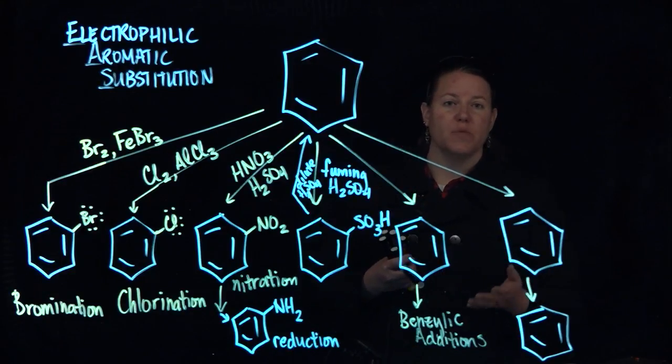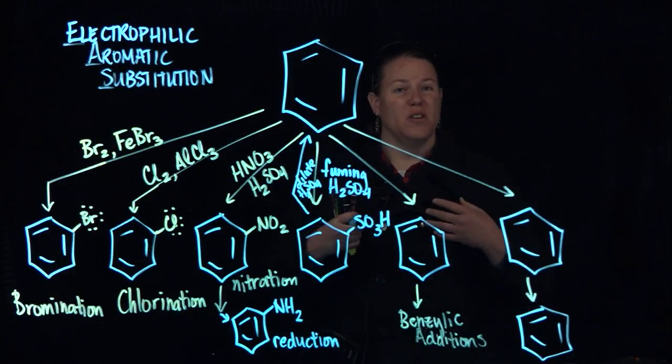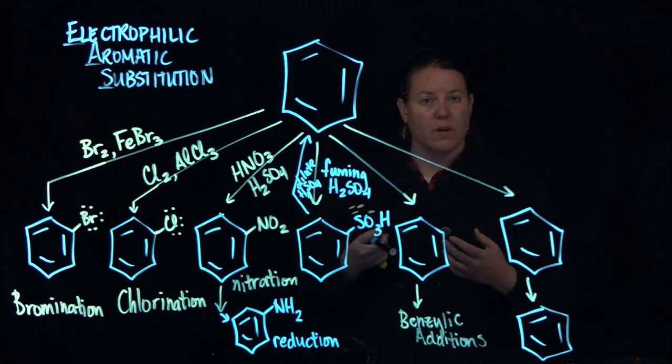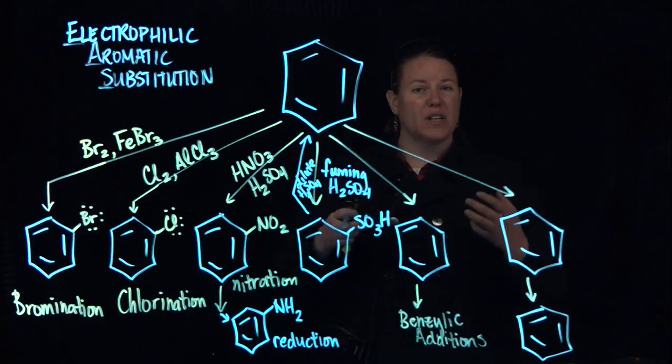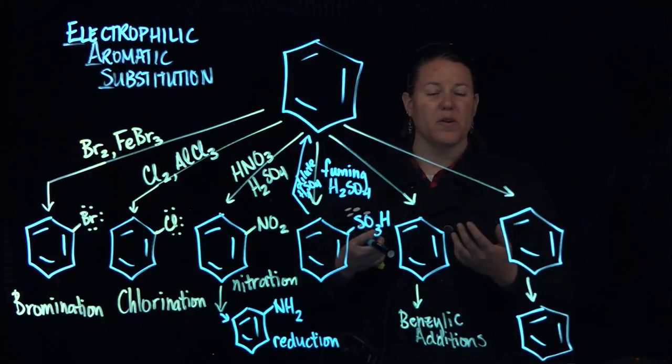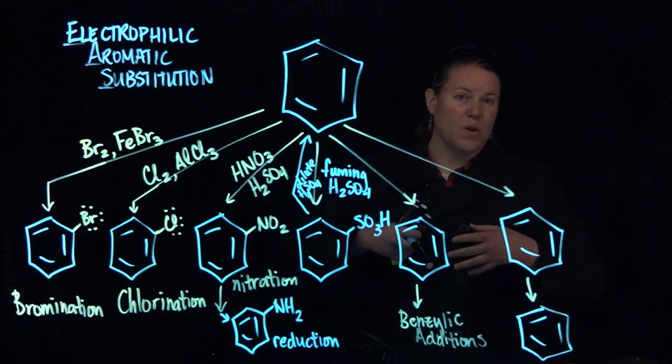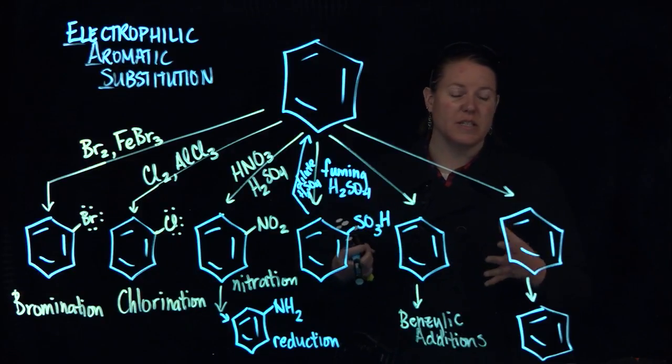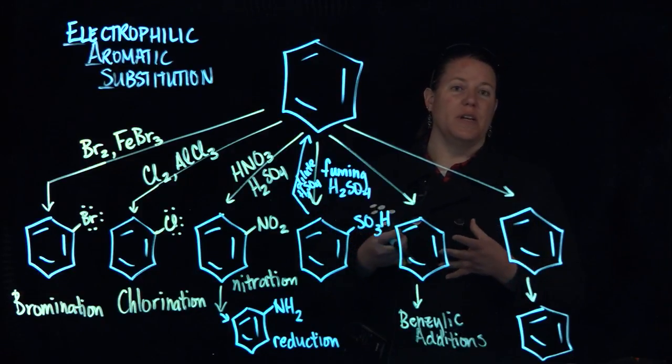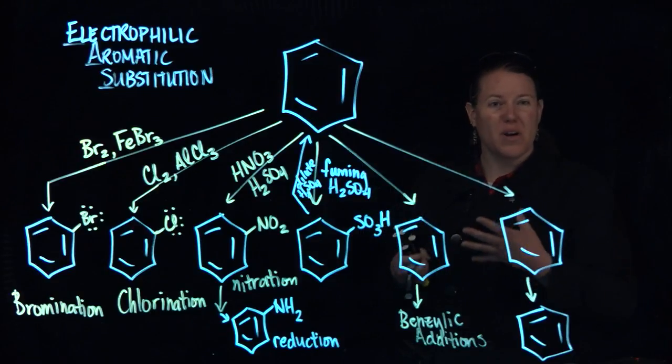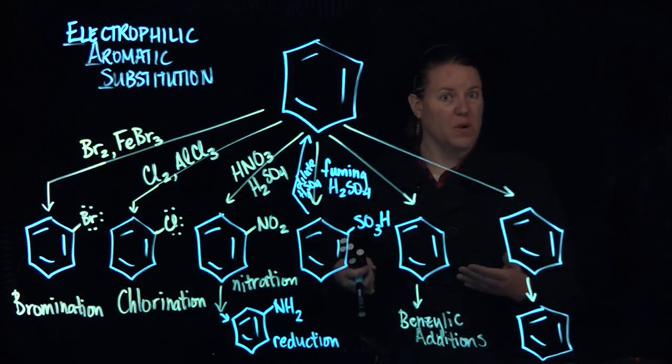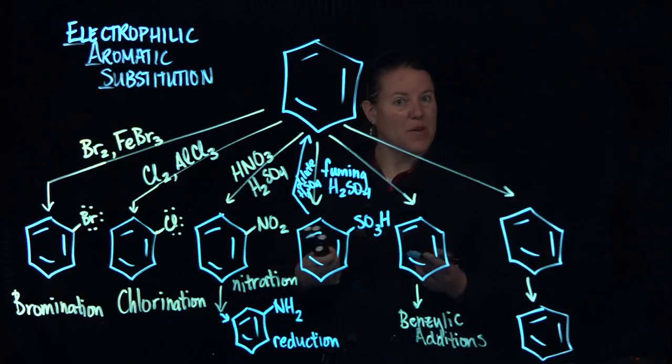A blocking agent because we're going to talk about directors: activators, deactivators, and meta directors versus ortho and para directors. And that's what we do when we want to do synthesis with benzene rings. We need to figure out a way to make sure we get what we want on, where we want it, in the way we want it. So it becomes an issue.